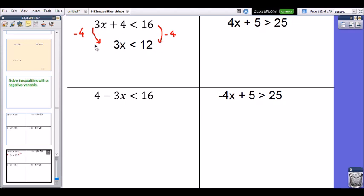Okay, so this is looking a lot nicer because I'm a bit closer to just x on its own, but I'm not there yet. At the moment I have 3 lots of x must be less than 12, but I want to know well what does 1 lot of x have to be? Well, how do I get from 3x to 1x? I'm going to divide it by 3.